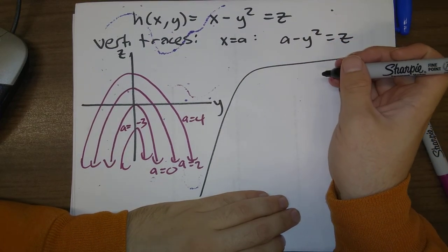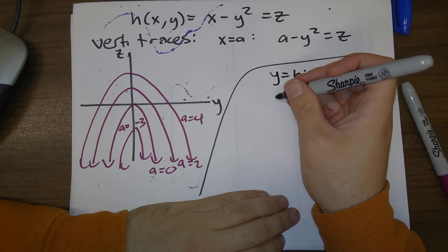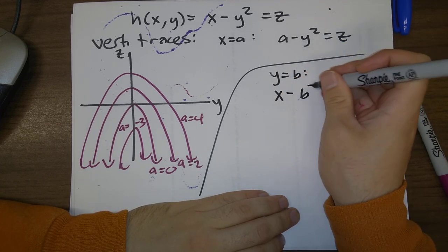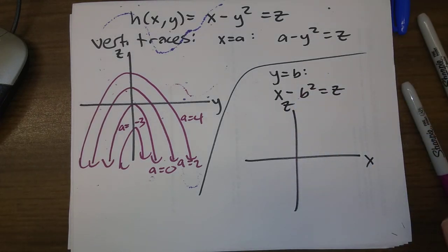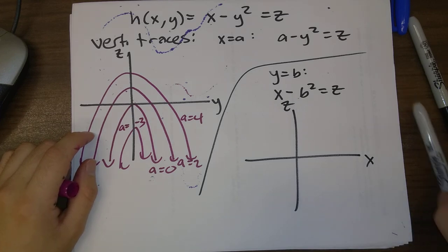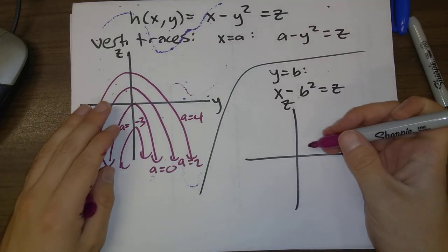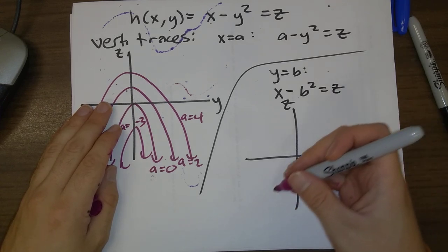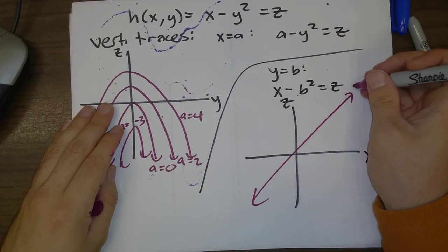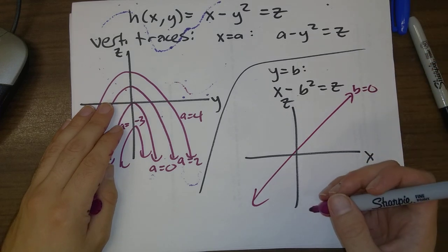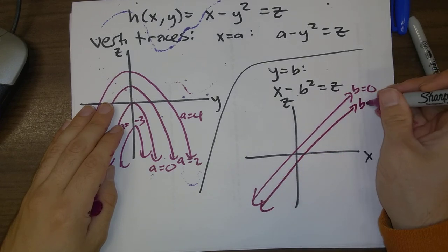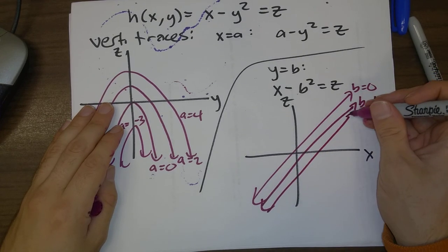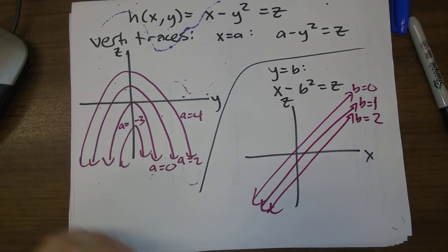For y equals b, we get x minus b squared equals z in the xz-plane. These are just lines of slope 1, where b determines the z-intercept. For b equals 0, z equals x. For b equals 1, z equals x minus 1. For b equals 2, z equals x minus 4. So parallel lines all with slope 1.